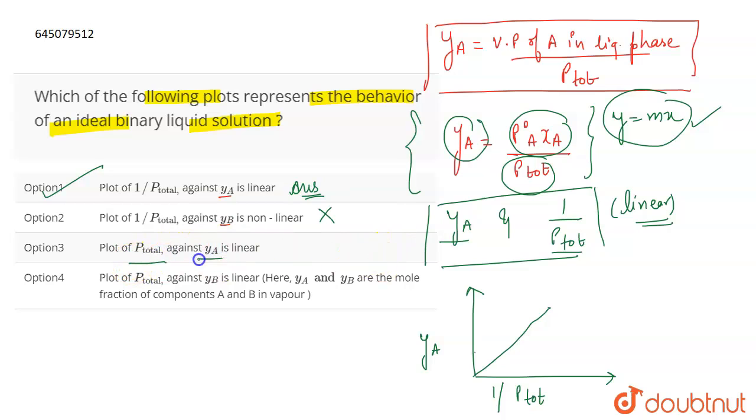The next is plot of P total against YA is linear. Again, incorrect as we saw. Plot of P total against YB is linear. Again, incorrect because YA and YB both are going to be behaving in the same way. So the correct answer is option 1. That's all for the question.